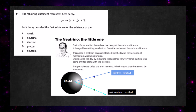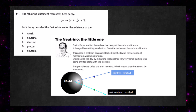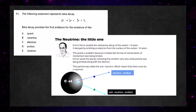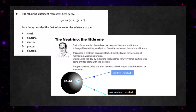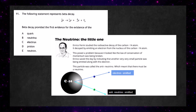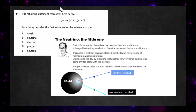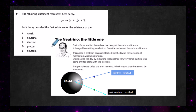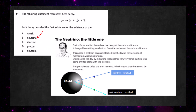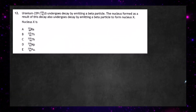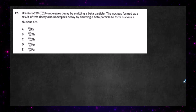This particle is called the anti-neutrino, which meant there must also be a neutrino. Beta decay provided evidence for the existence of the neutrino because when they did the momentum calculations, it didn't come out right — there was some missing mass they couldn't account for, and it was the neutrino. Answer B.